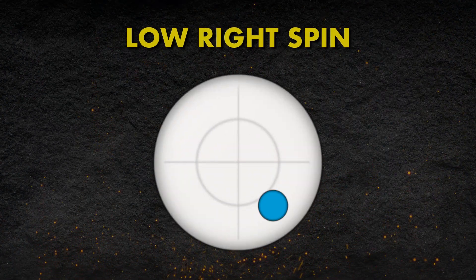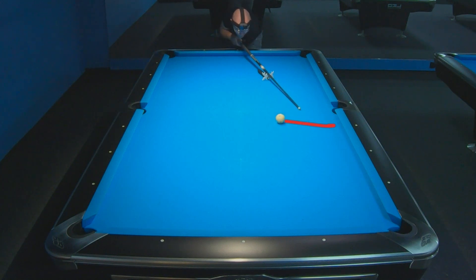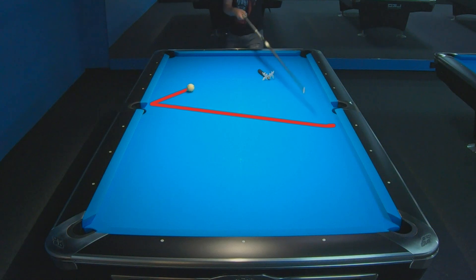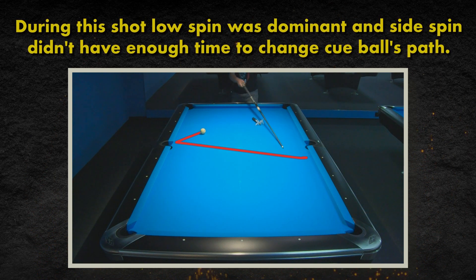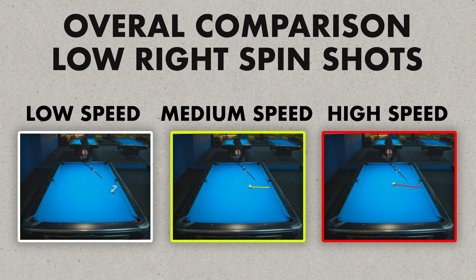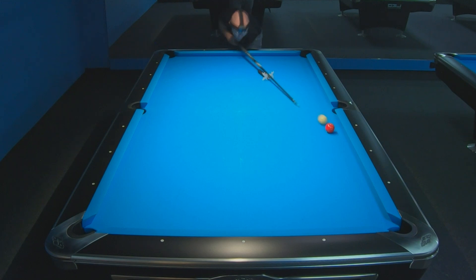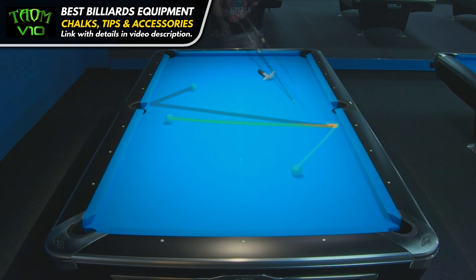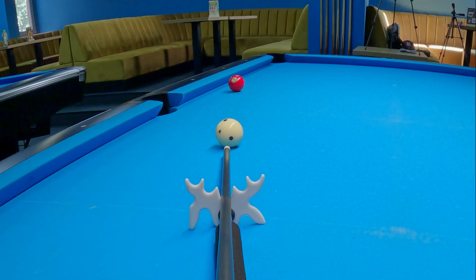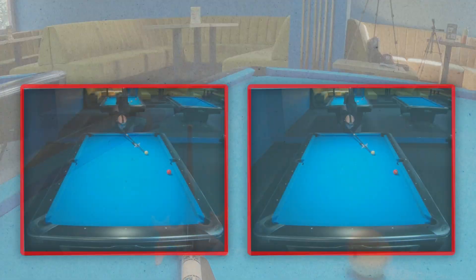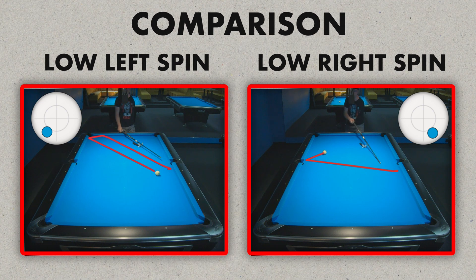Very interesting is the situation when we apply low right spin at high speed. For the first time during a right spin shot, the cue ball immediately goes towards the top half of the table. This is caused by the fact that the low spin was dominant and the sidespin didn't have enough time to change the cue ball's path. The biggest difference is visible comparing all three shots with this spin, because in each case the cue ball traveled a different path and landed in a completely different area of the table. With low left spin at high speed, the cue ball immediately goes towards the top short rail with a lot of power — looking completely different from the low right spin shot.